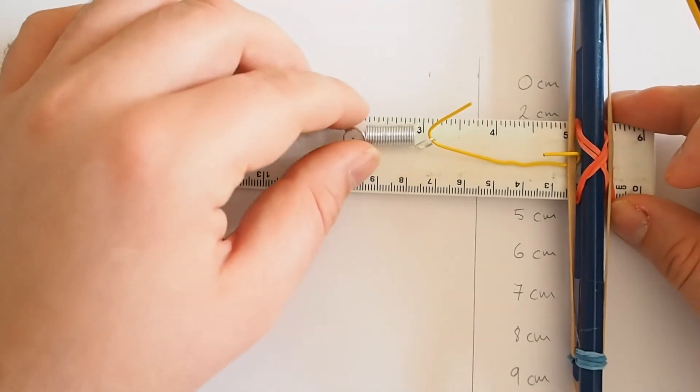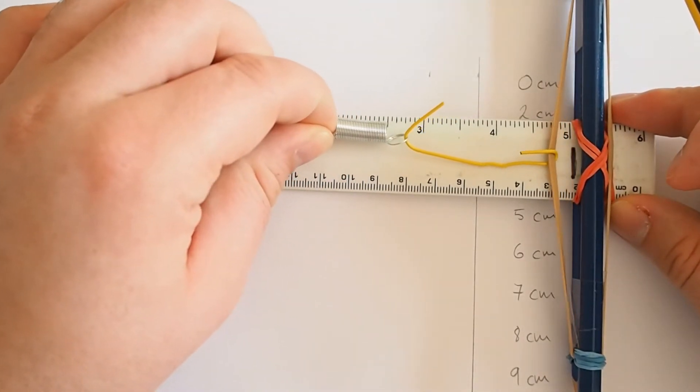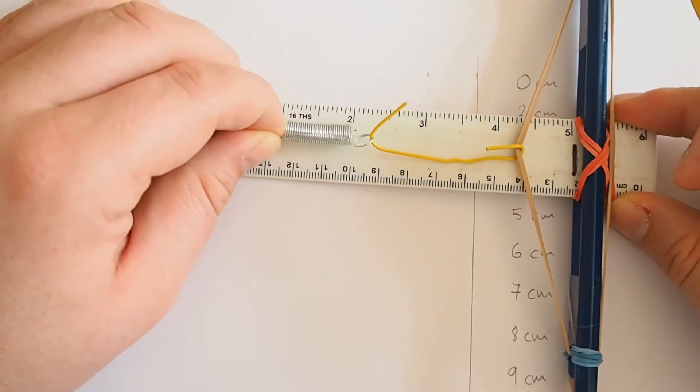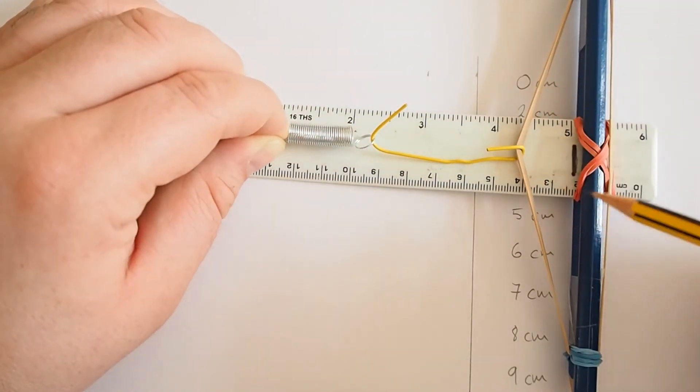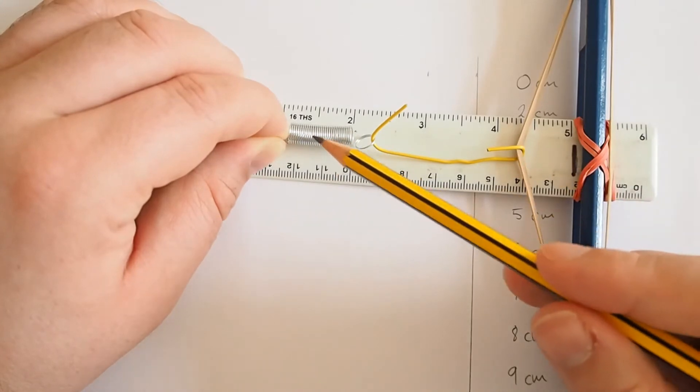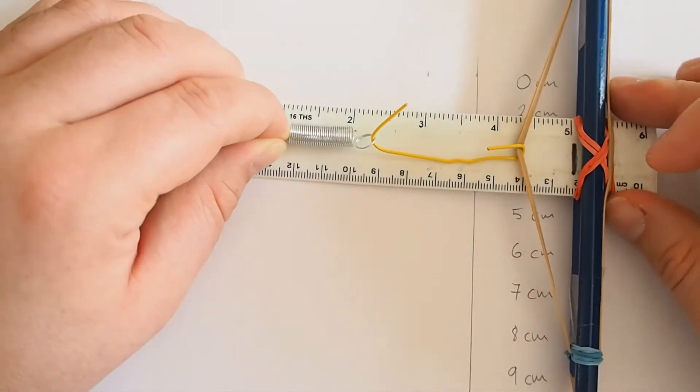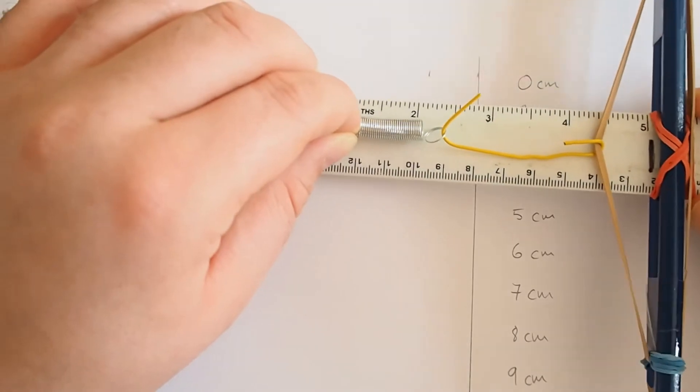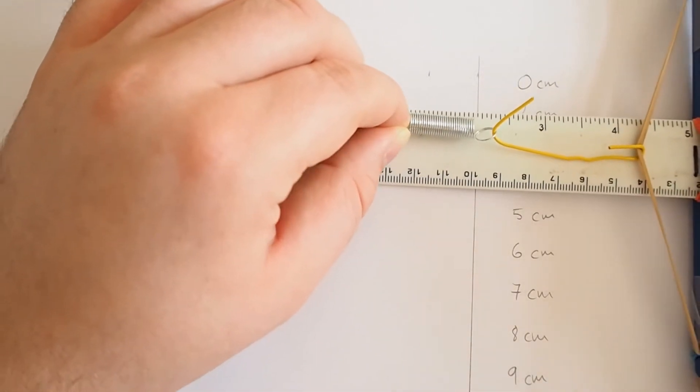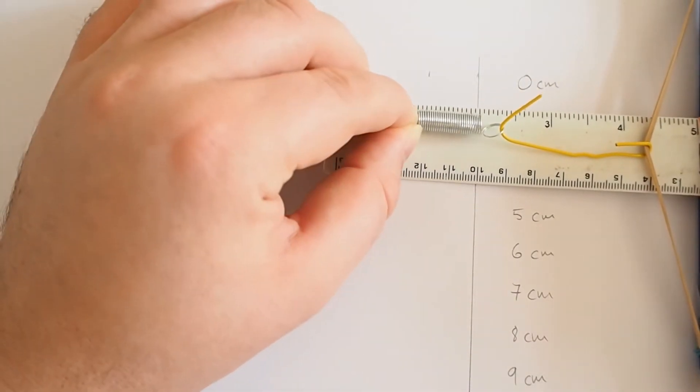So now what I'm going to do is pull on this end of the spring until I've extended this by two centimeters. Now remember, I was already at two centimeters, so now you can see it's started to extend a little bit. So what I'm going to do is move this back to the line. There we go.